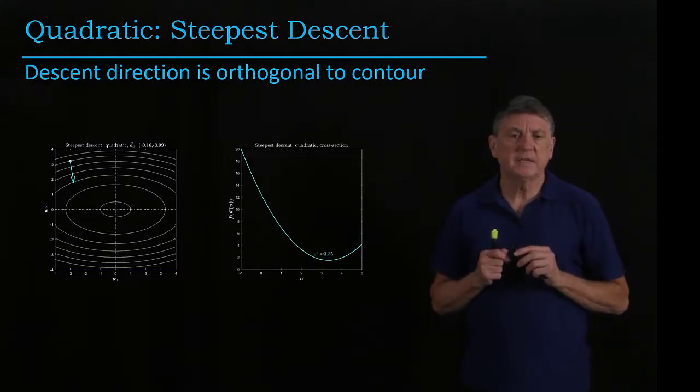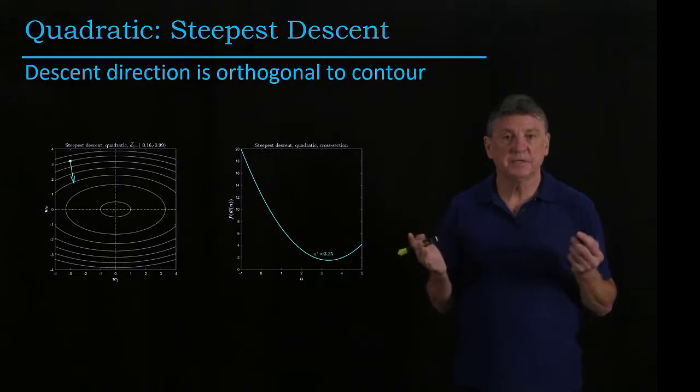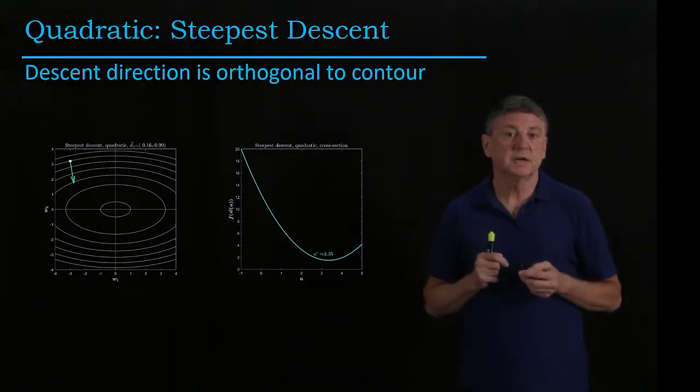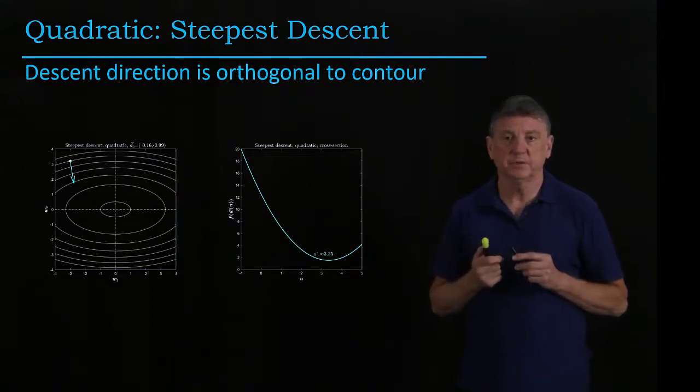And if we then take a slice in that direction, we see that because this is a quadratic function, that the slice is a quadratic, and we could use an approximation method if we chose.